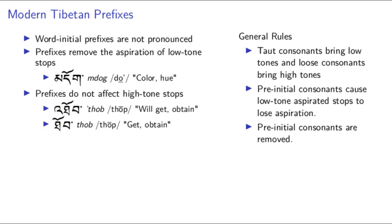Now, this actually doesn't happen for the high tone aspirated stops, so onset prefixes do not affect their pronunciation, or the pronunciation of high tone unaspirated stops. As for why this doesn't occur with the high tone aspirated stops when it does occur with the low tones, I don't really have any intuition here other than the fact that high tones already distinguish aspiration, so this sort of allophonic variation could not occur so freely. In any case, we see that these two verb forms are spelled differently, reflecting a different Old Tibetan pronunciation, but are now pronounced the same.